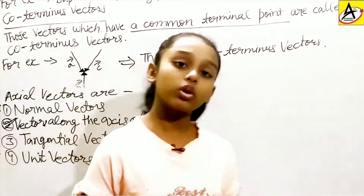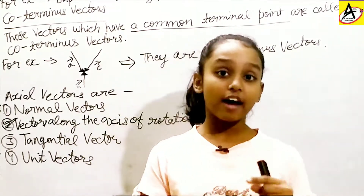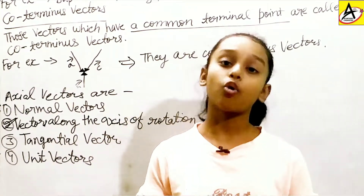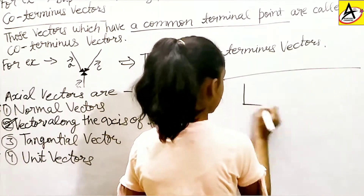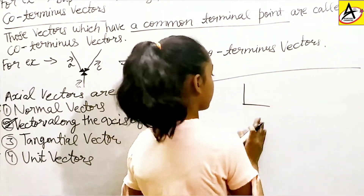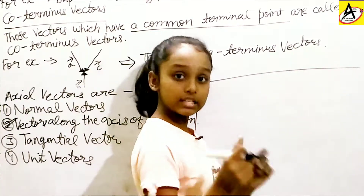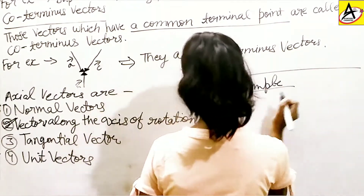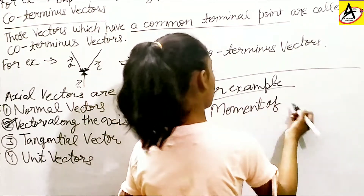I also want to ask you: what are tensors? Simply, the physical quantities which have no specified directions and have different values in different directions are called tensors. For example, moment of inertia is a common example — that will be discussed more in the next video.